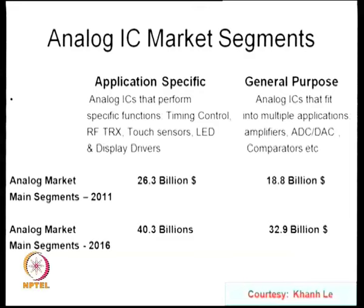By 2016, the application-specific market is expected to reach 40 billion and general purpose 32 billion — a total of 74 billion dollars. Analog IC companies compete through special product design skills, breadth of product portfolio, distribution network quality, and pricing strategy. The price-to-earnings ratio is very important: linear has 52 percent operating margin, Analog Devices 30 percent, Maxim 26 percent.